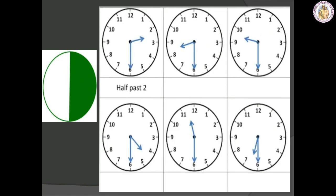The next one we are going to see is half past. Looking at the green shaded circle, the full half portion is called half. When the minute hand is on 6, it is called half. Half past 2 is the first picture — that is 2:30. The next time is 8:30, that is half past 8. The next one is 9:30, that is half past 9. You are going to do the remaining ones the same way.